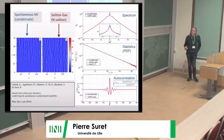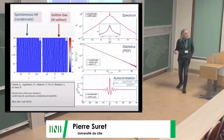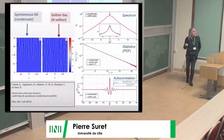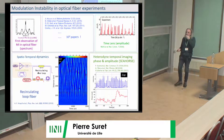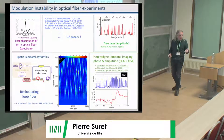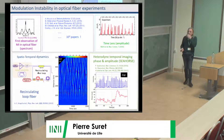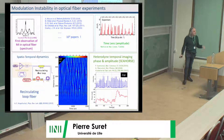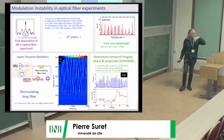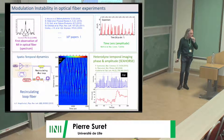The conclusion is that you can precisely model spontaneous modulation instability using a specifically designed soliton gas. In photonics, in optical fibers, the first observation of modulation instability dates to the 1980s, initially through spectral measurements only, since the spectrum is the easiest thing to measure in optics. It is much more difficult to measure the field, especially the phase.